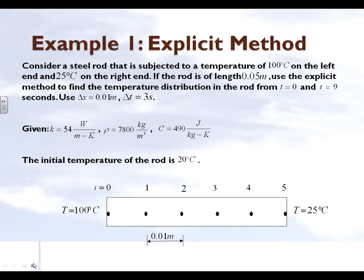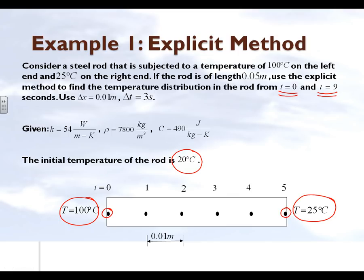The problem statement says we have a steel rod. The temperature subjected on the left side is 100 degrees Celsius, the right side is subjected to 25 degrees Celsius, and the initial temperature of the rod is 20 degrees Celsius. We want to find the temperature of the rod from 0 to 9 seconds. At t=0, the temperature is 100°C at the left node, 25°C at the right node, and 20°C at all interior nodes.